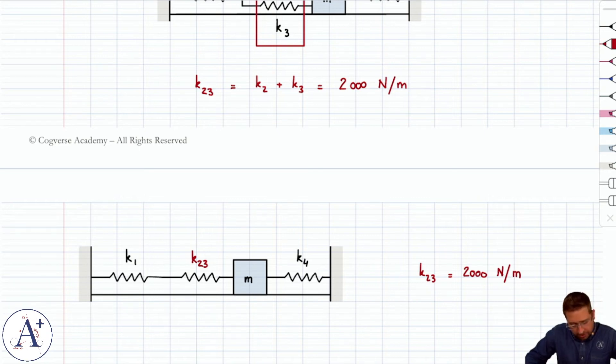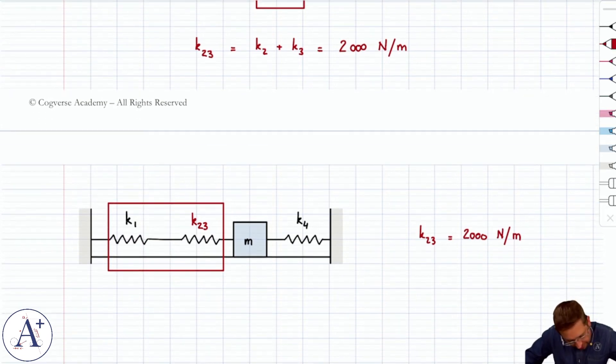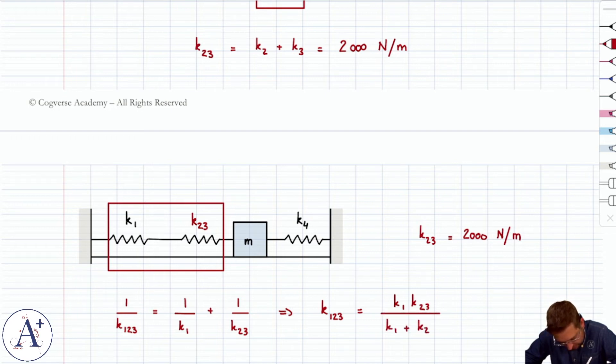And now I look at my three springs, and I have to figure out what the next combination is. And so I look at the next obvious combination. Now k1 and k2,3 are obviously in series. There's no doubt there. This is exactly what we drew above. They're one after the other. And so we are going to have an equivalent spring constant, call it k1,2,3, that we're going to find by writing 1 over k1 plus 1 over k2,3 is equal to 1 over k1,2,3. That's the same as having k1,2,3 is equal to k1 k2,3 divided by k1 plus k2,3.